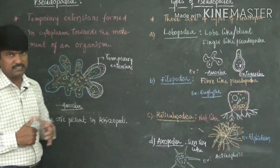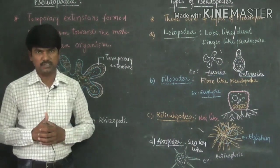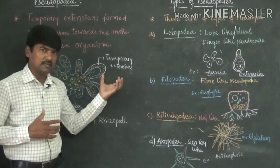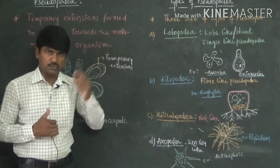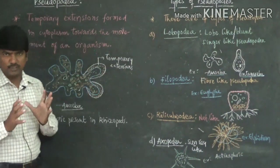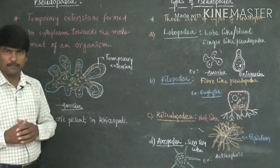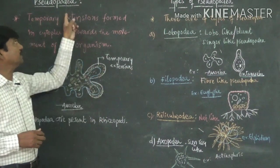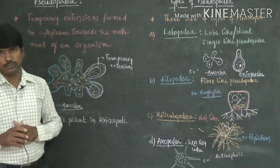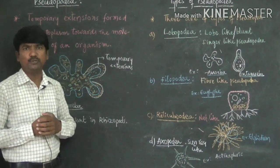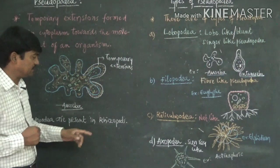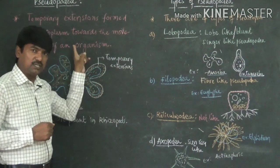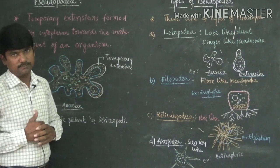Pseudopodia are not present in all protozoans. They are found in a specific group of animals belonging to the Rhizopoda. Pseudopodia are the main locomotive structures present in rhizopods, which belong to the protozoan phylum.